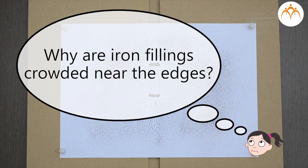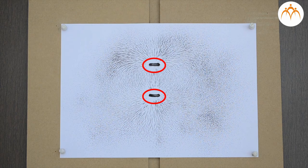Why are these lines crowded near the edges? The force at this location is stronger as compared to the other location.